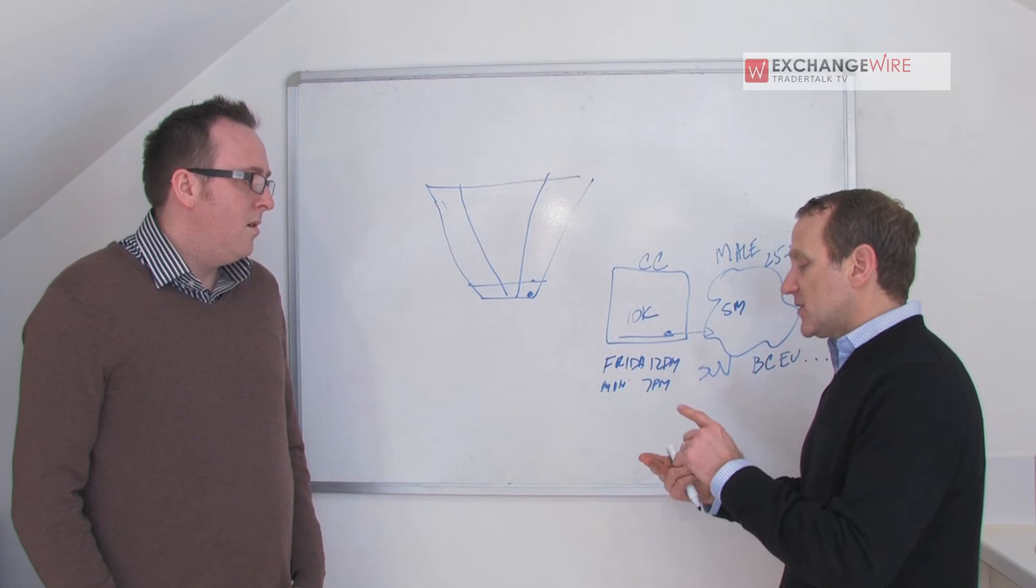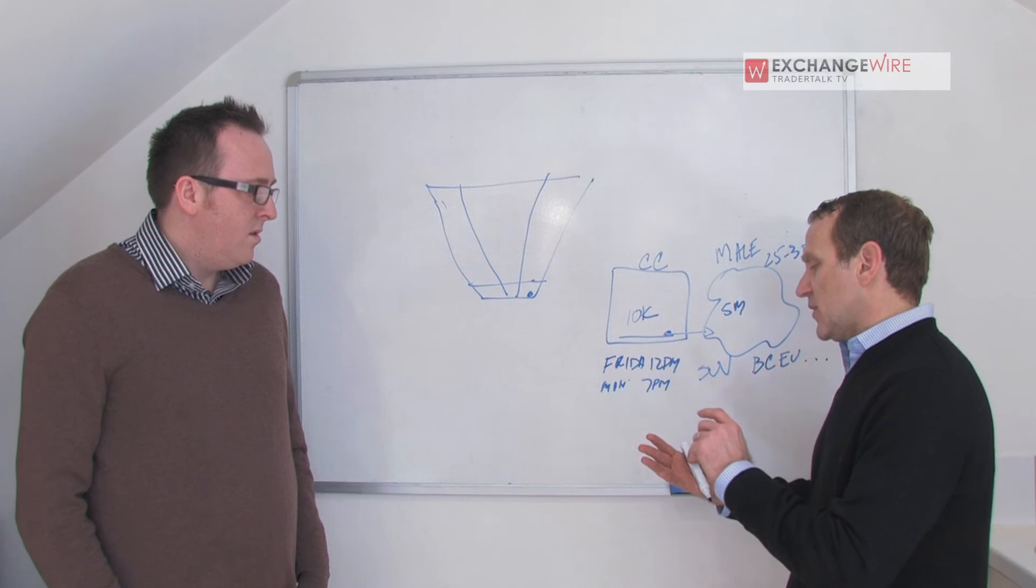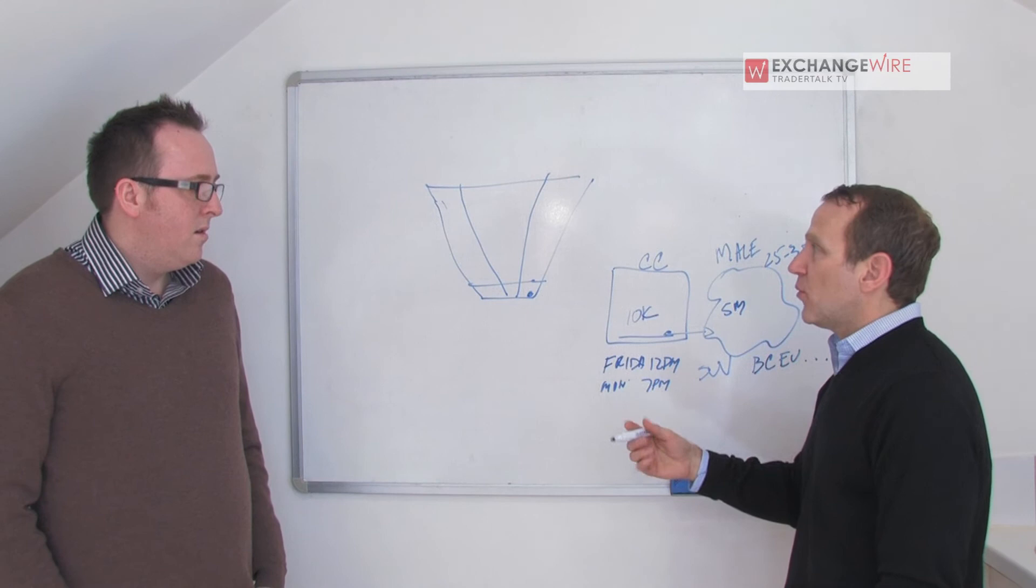We look at things like time of day, day of week, computer system that they're accessing through lots of different factors, right? And then we score those users. So we score them in real time. The other users that look like them and then push them out through, you know, the platform that the advertiser's looking to buy on. So it could be a DSP that they're buying. And we're pushing those cookies, those scored cookies out in real time.